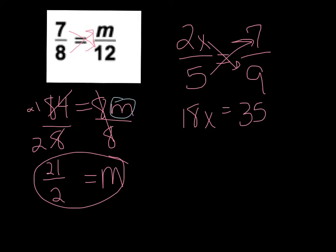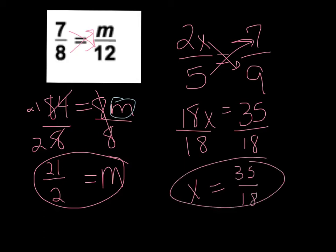And then 5 times 7 is 35. We're going to divide by 18 because we want to isolate the x. And x equals, now 18 won't go into 35 evenly and they don't even have anything in common, so you can leave this 35 over 18.